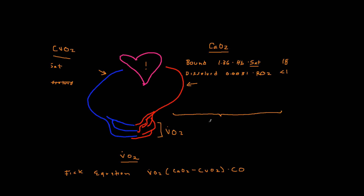When dealing with critically ill patients, the key question is what is being consumed and how does that relate to what is being supplied. When we talk about supply we talk about DO2, which is oxygen delivery. Oxygen delivery is the content of arterial oxygen times cardiac output. Recognizing that the dissolved term is negligible and arterial saturation is close to 100%, DO2 is essentially hemoglobin times cardiac output.